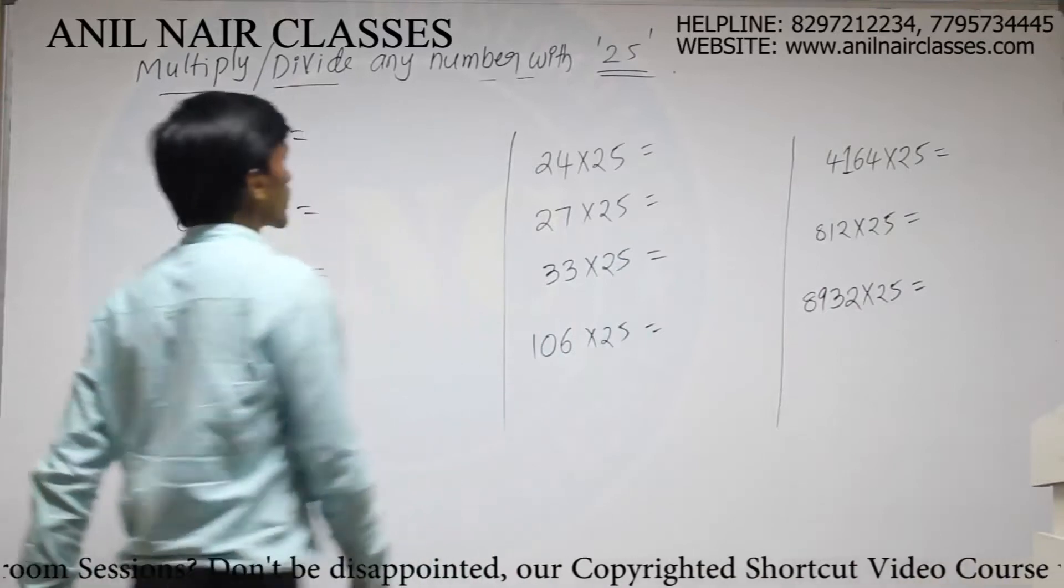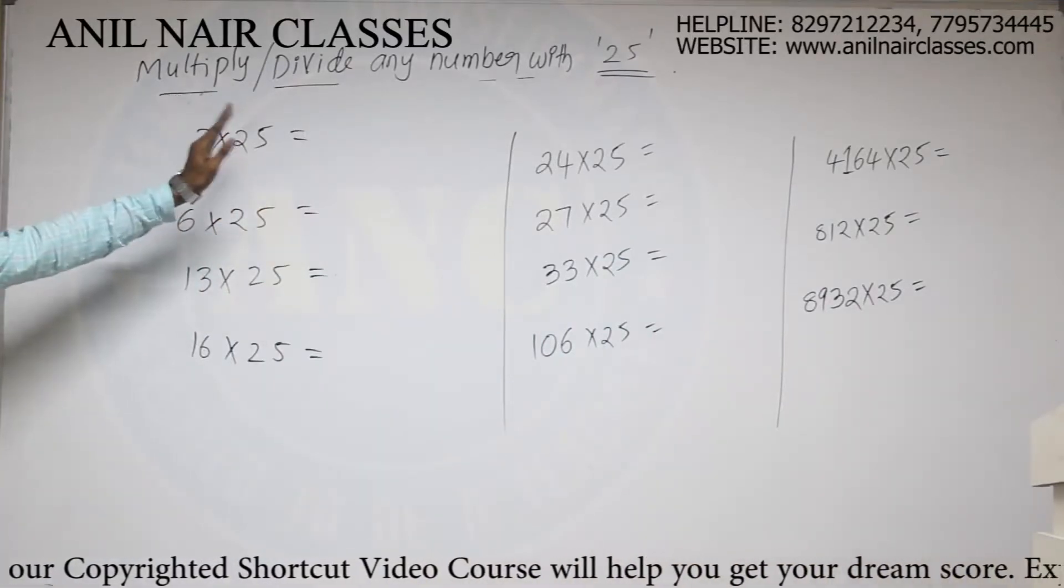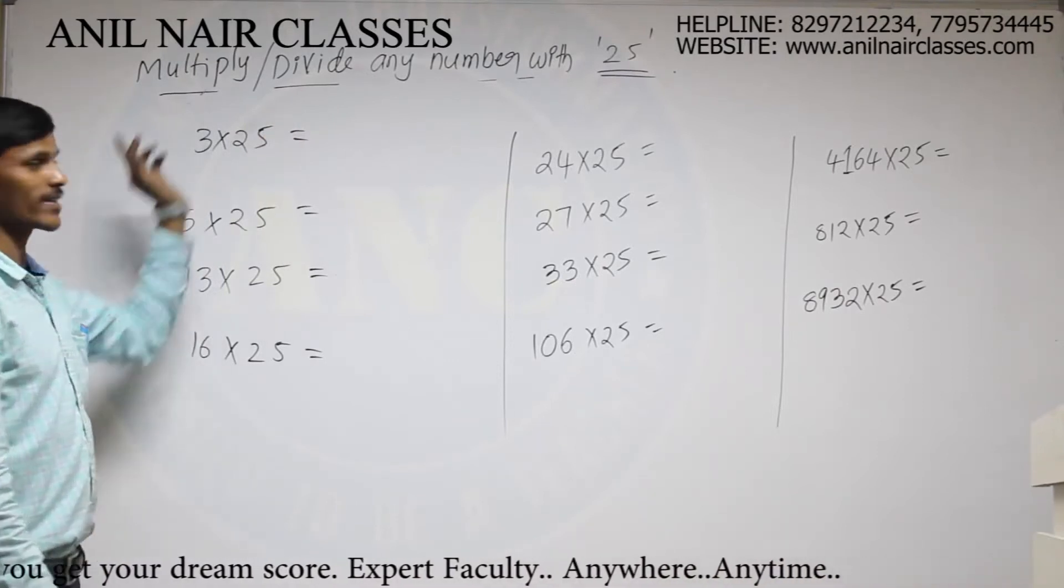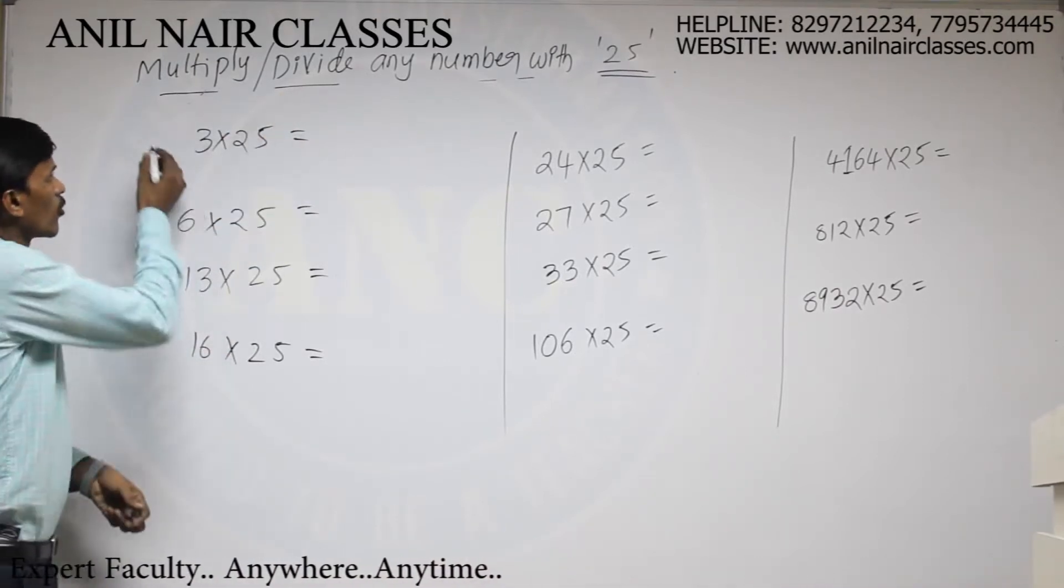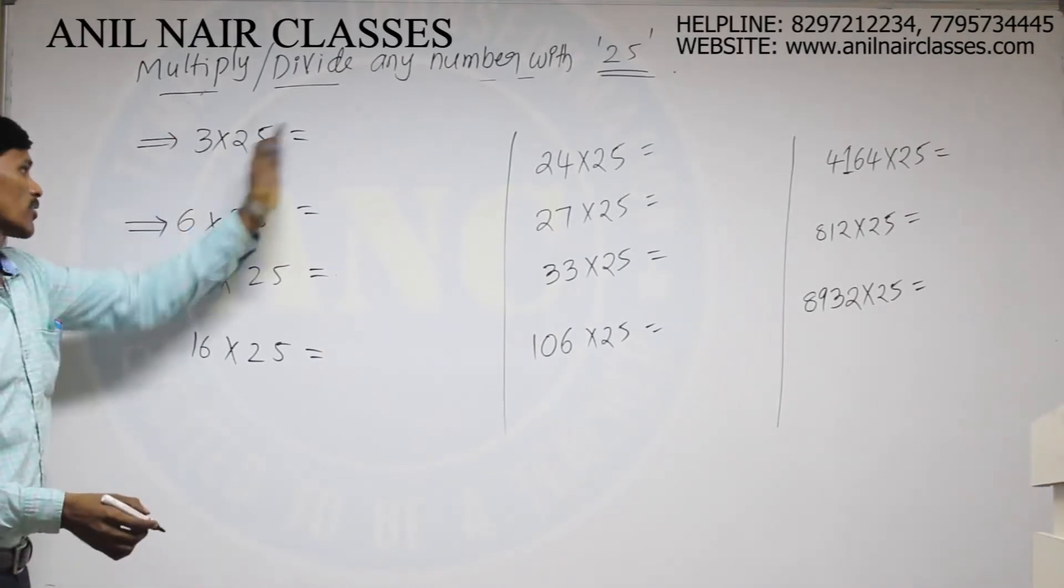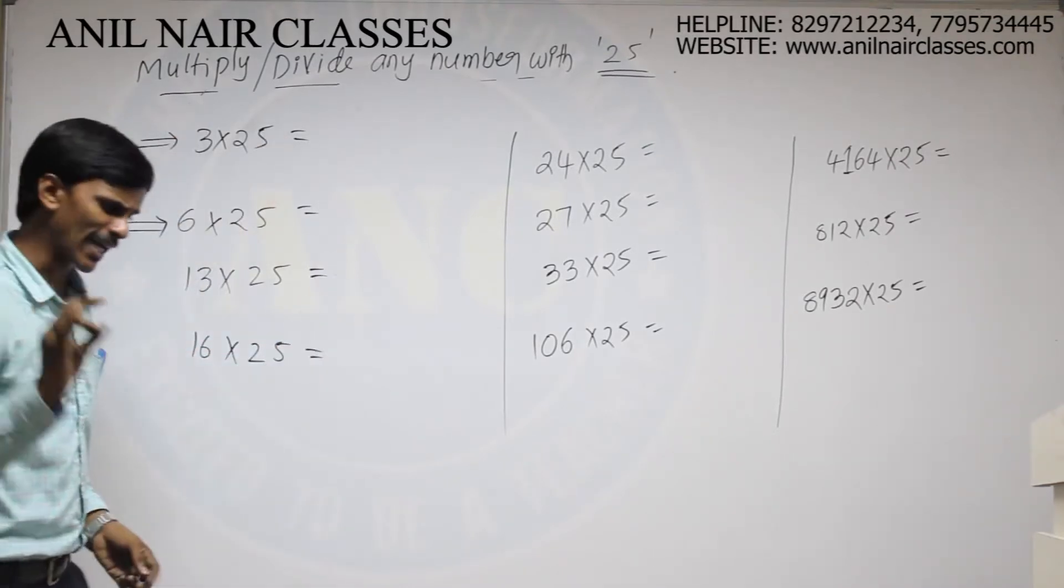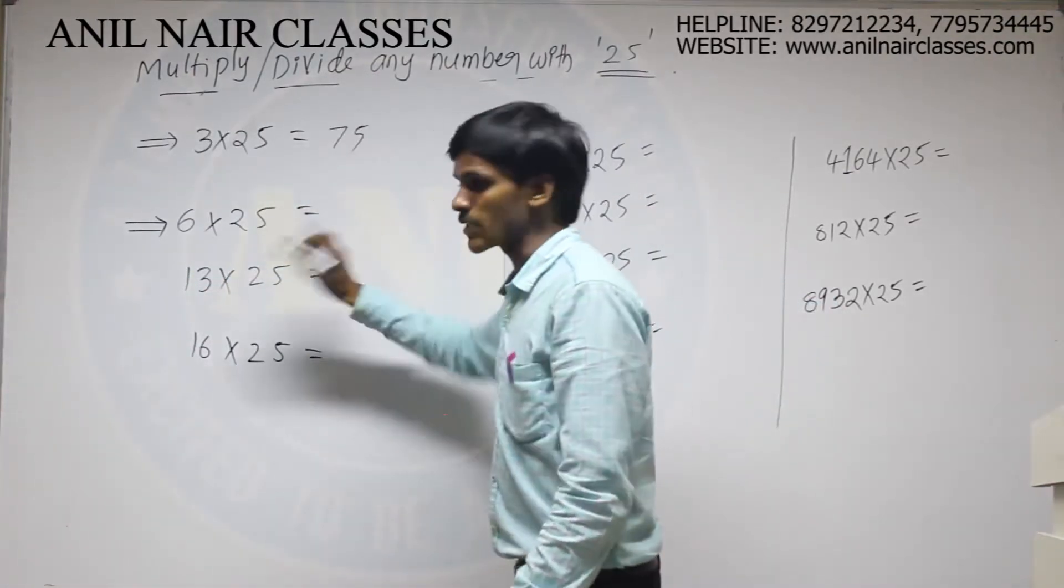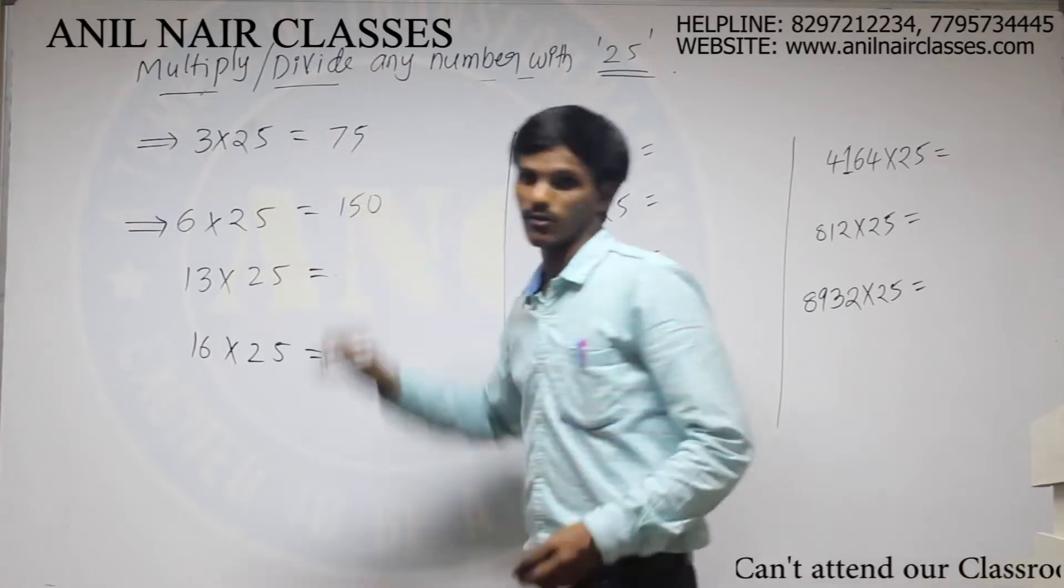Today we are going to discuss a trick where we have to multiply any given number with 25. Generally, for these type of small calculations, 3 into 25, 6 into 25, we can directly give the answer without thinking. For suppose, 3×25 are 75, 6×25, 150.